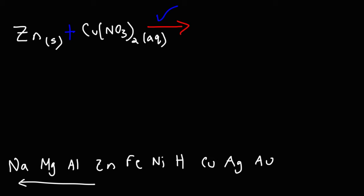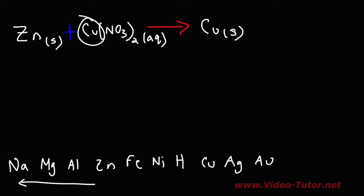Now we need to determine the products of this chemical reaction. We know copper is going to be displaced out of the solution. Right now it's in the aqueous phase, meaning it's dissolved in water, but it's going to pick up some electrons from zinc metal and precipitate as copper metal out of the solution.